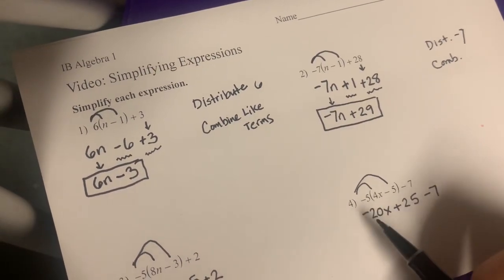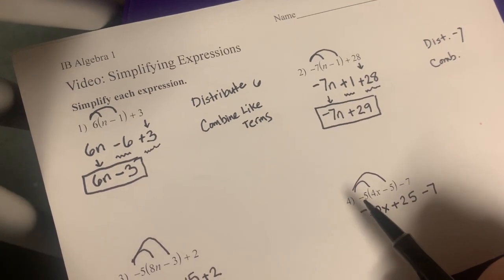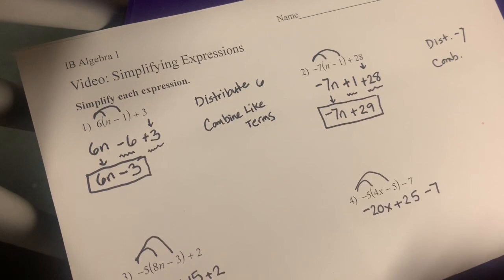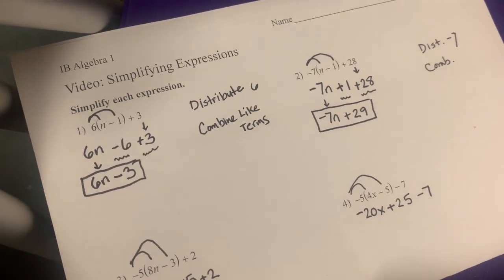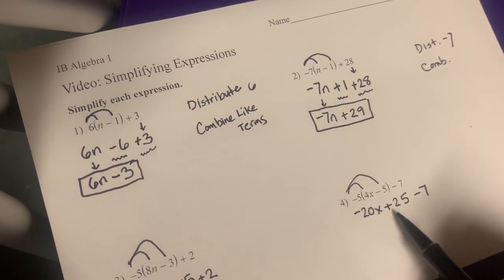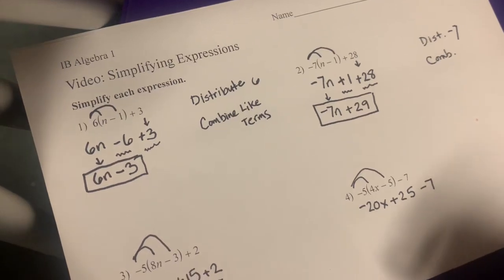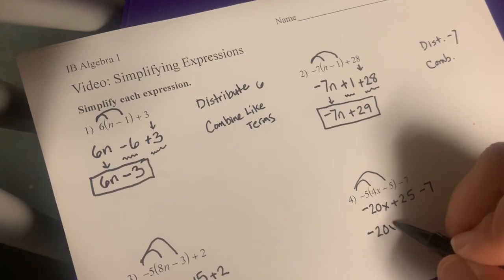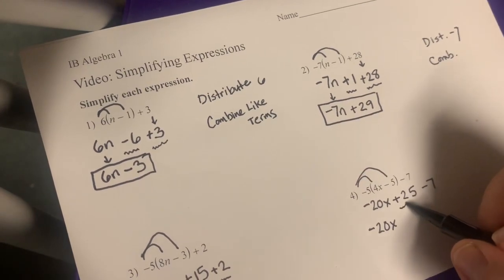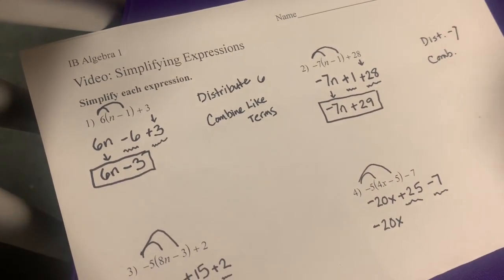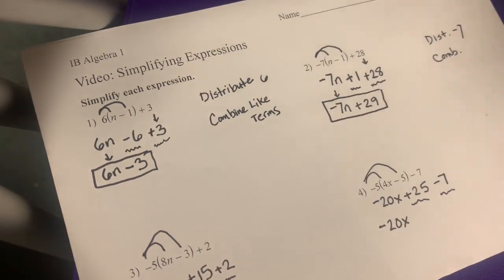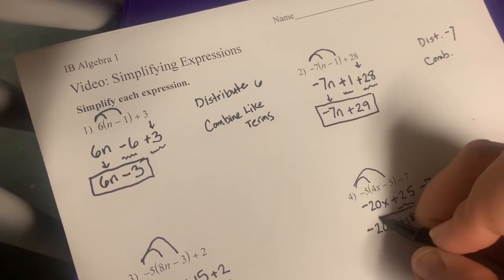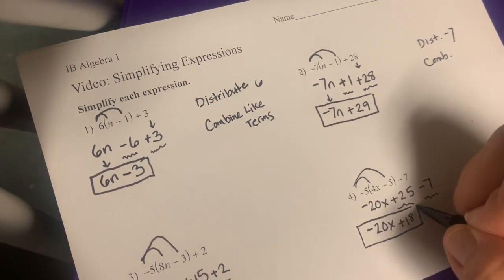And then bring down that negative 7. So we've got to be really careful with our negative signs to make sure that we're paying attention. The negative goes with the number, so negative 5 and negative 5, because we need to remember that those multiply to give us a positive. If we have the wrong sign in here when we combine, we're going to get the wrong number. All right, so negative 20x, we've got plus 25 minus 7, that's going to give us 18, so plus 18. And then our final answer we've got negative 20x plus 18.